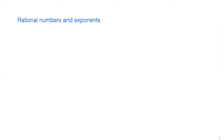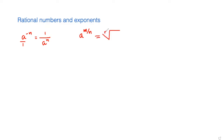If we have something like a to the power negative n, as the exponent is negative, we can make it positive by putting it underneath the bar, writing it as 1 over a to the power n. We just flip it over and then n becomes positive. And a to the power m over n, we can write this expression as the nth root of a to the power m. So this n becomes the index of the radical.